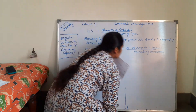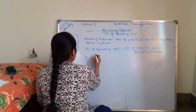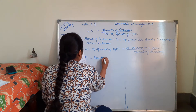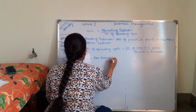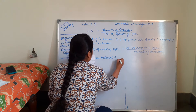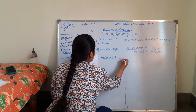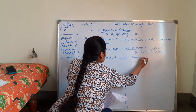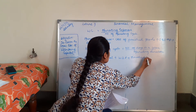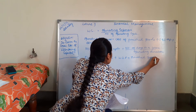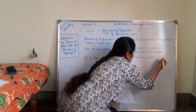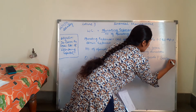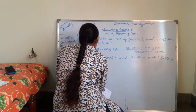Operating duration equals raw materials plus work in progress plus finished goods plus debtors minus creditors.